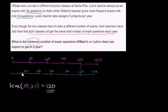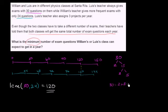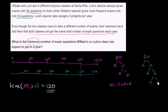There are other ways to find the least common multiple other than just listing the multiples. You can use prime factorization. 30 is 2 times 15, which is 3 times 5, so 30 equals 2 times 3 times 5. And 24 equals 2 times 12; 12 is 2 times 6; 6 is 2 times 3. So 24 equals 2 times 2 times 2 times 3.